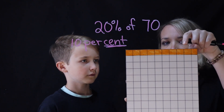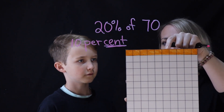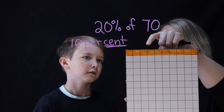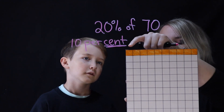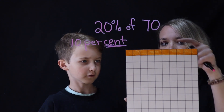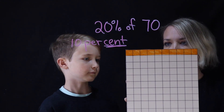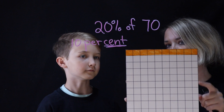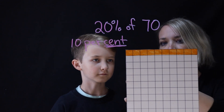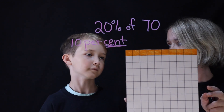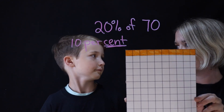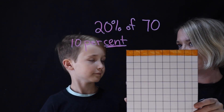So 1, 2, 3, 4, 5, 6, 7, 8, 9, 10. And we've got 10 going this way. So to show 10%, it's just the orange one, right? It's 10 per hundred.